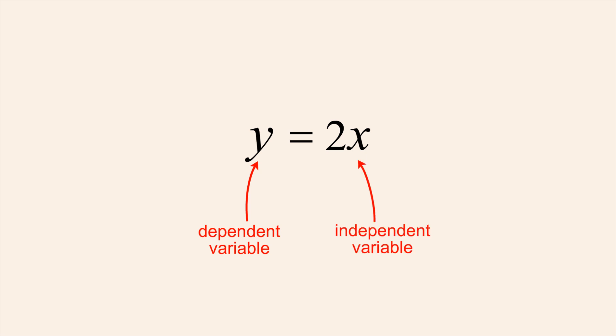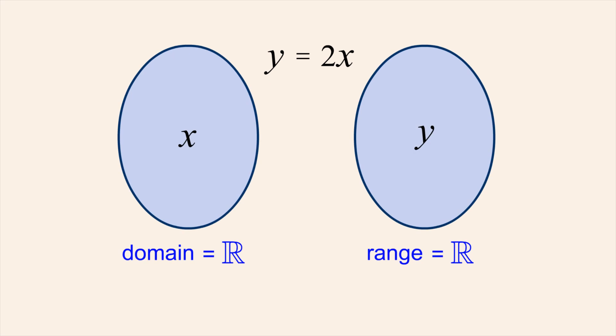In this function, the independent variable x can be any real number. This equation tells us that y must always be twice the value of x. Therefore, if x can be any real number, so can y. Since the input x and the output y can be any real number, both the domain and range of this function are the set of real numbers R.